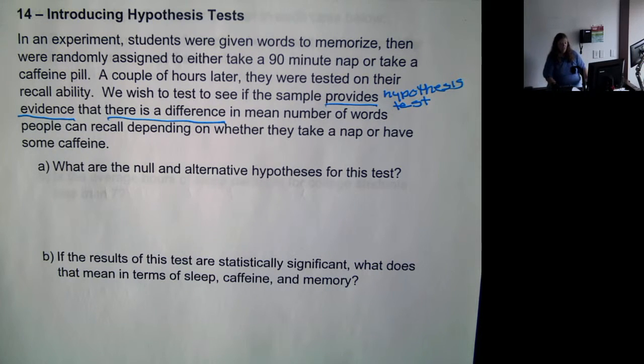So, the first thing we need to do is set up null and alternative hypotheses. Now, the null hypothesis is actually what we're testing. The alternative is what's going to be true if the null hypothesis is not.